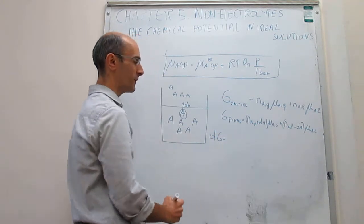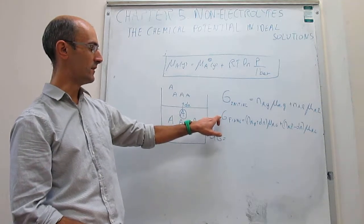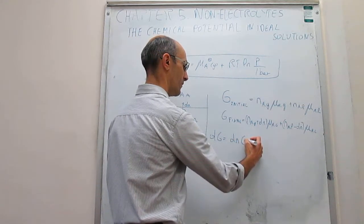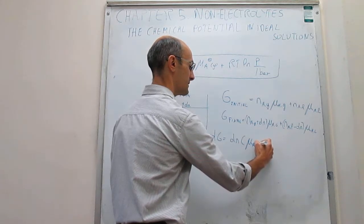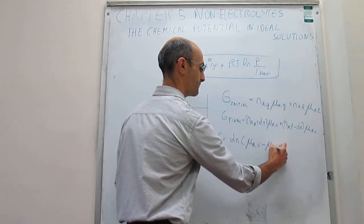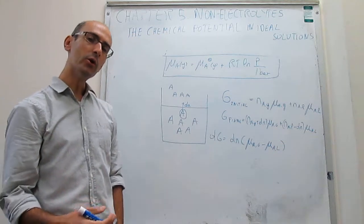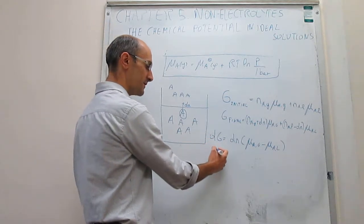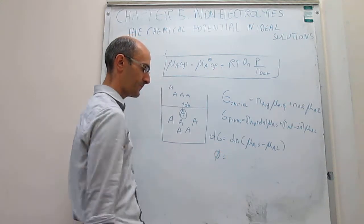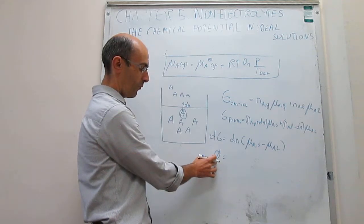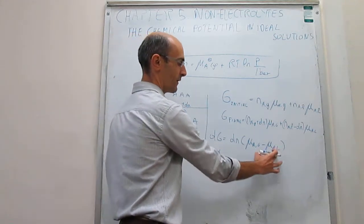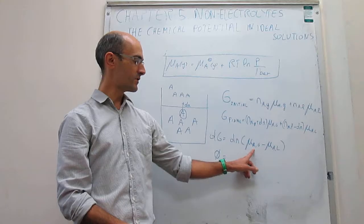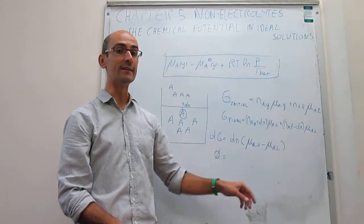If we calculate the change in Gibbs energy by subtracting initial from final, we get dN times the difference in chemical potentials between the gas and the liquid phase. We're always working at equilibrium between the phases, so this change must equal zero. The only way that can happen is if the chemical potential in the gas phase is identical to the chemical potential in the liquid phase.